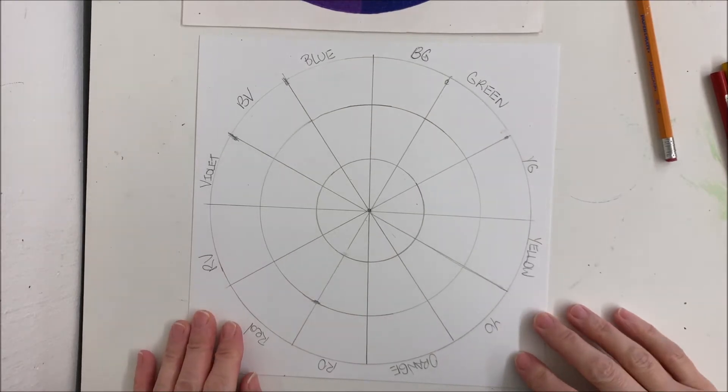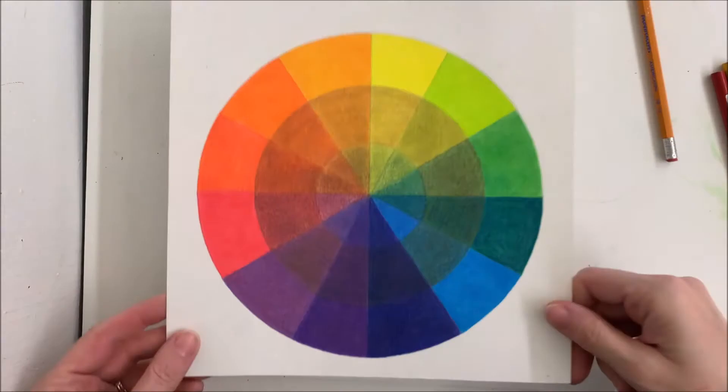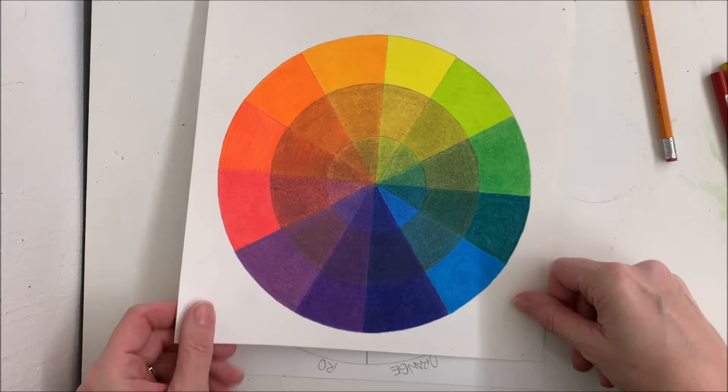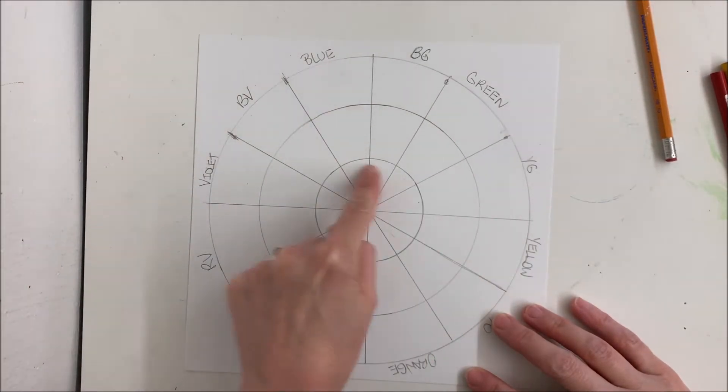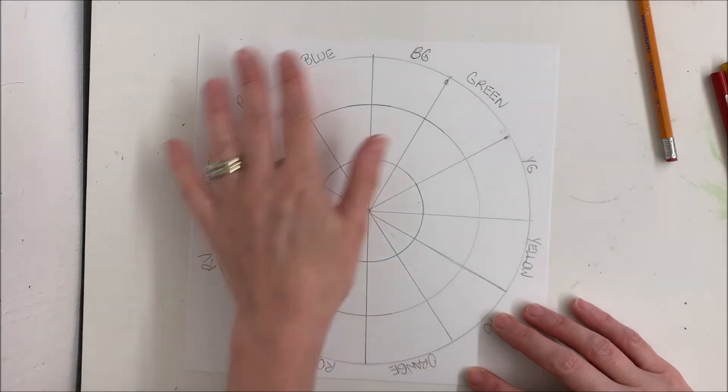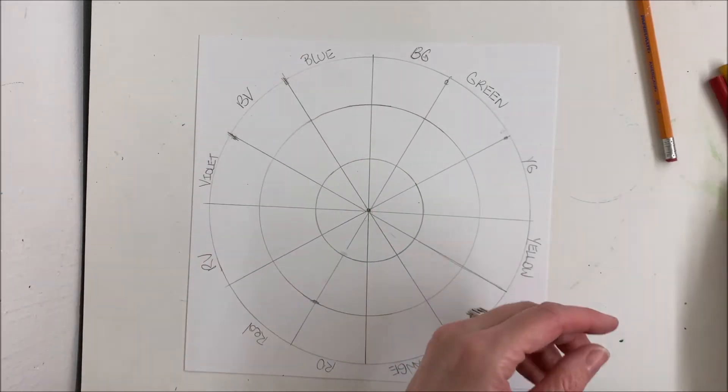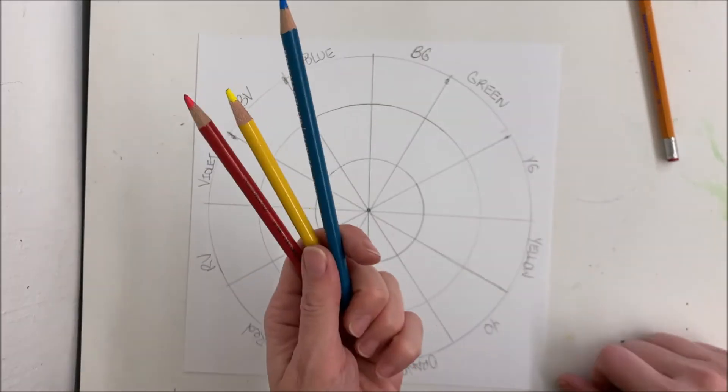Hello there everyone. I'm going to show you how to fill in your colored pencil color wheel. So last time we drew our color wheel out, three rings, twelve sections, and we labeled it with our colors. So now we're going to fill it in using only three pencils.